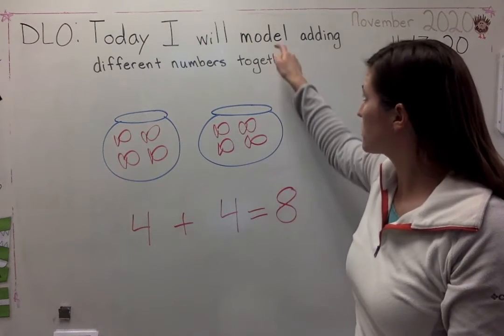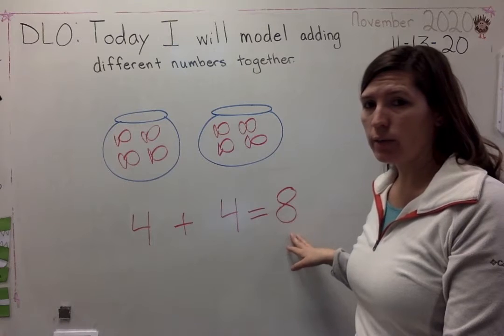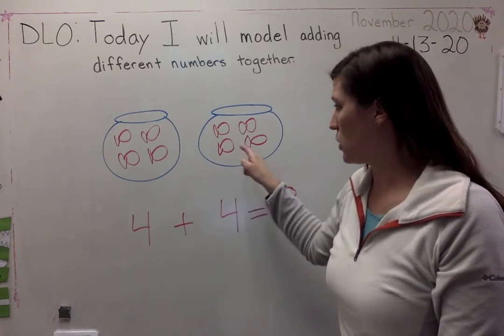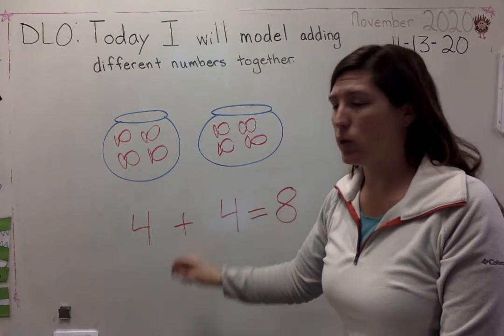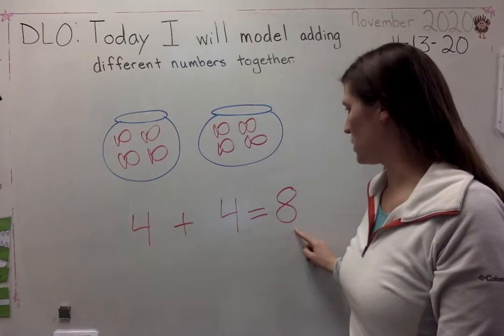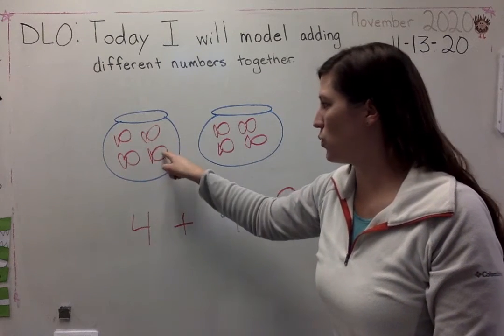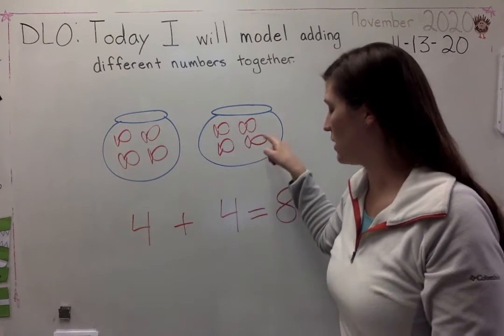So I modeled my addition problem by writing an equation and I modeled by drawing a picture. So let's read our equation. Four plus four equals eight. I could count them to model it. One, two, three, four, five, six, seven, eight.